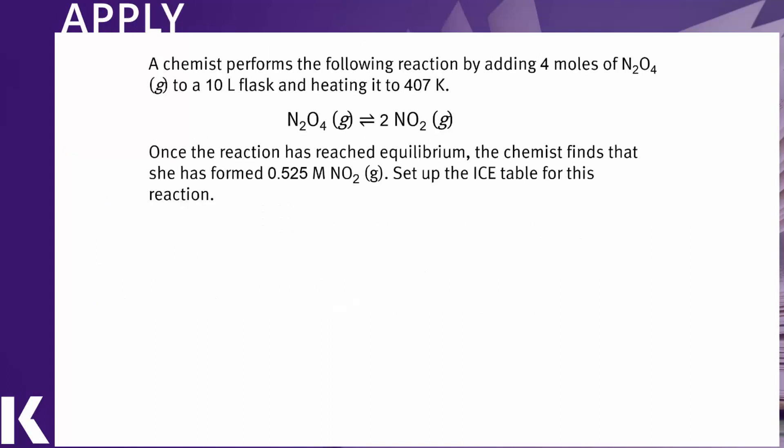Let's look at a particular example. In this case, we have a chemist performing a reaction adding four moles of N2O4 to a 10-liter flask and heating it to 407 Kelvin to kick off the reaction. There we have the equilibrium expression. We know that one mole of N2O4 gives us two moles of NO2, so there's a one to two stoichiometric relationship. We know that once the system reaches equilibrium, the flask contains a concentration of NO2 equal to 0.525 molar. So our task is to set up an ice table for this reaction.